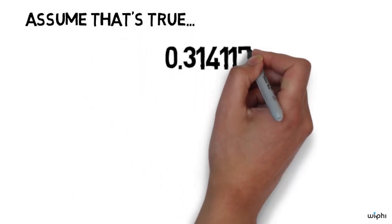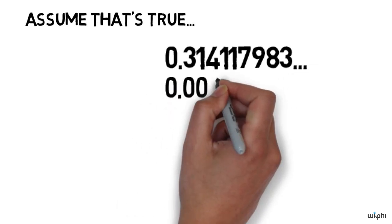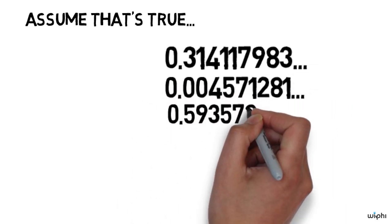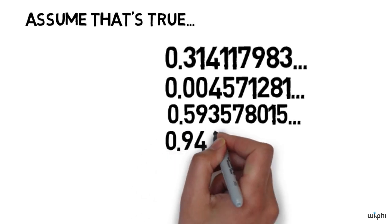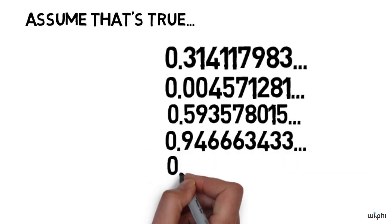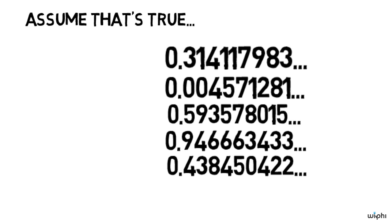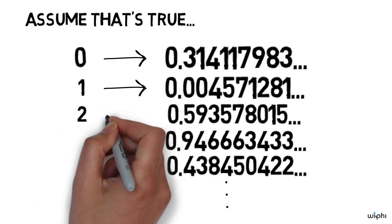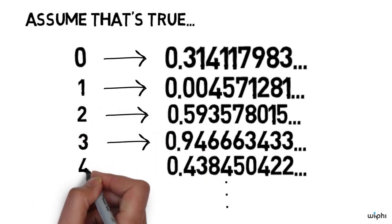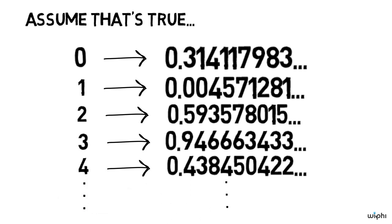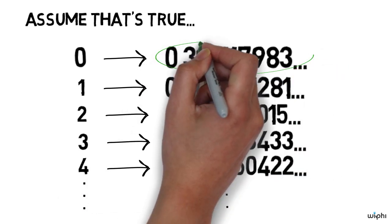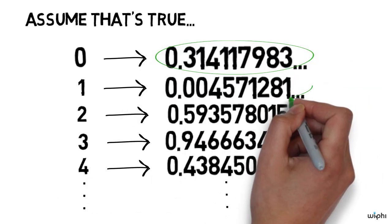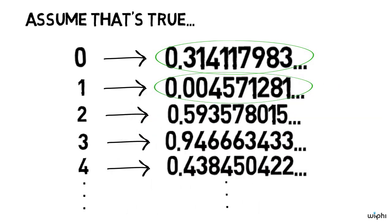Here's a diagram representing that. Each real number between 0 and 1 can be represented as a decimal expansion — you can write it as 0-point and then an infinite sequence of digits. So suppose we can assign a different natural number to each real number between 0 and 1. To the natural number 0 we assign this real number, to the natural number 1 we assign this real number, and so forth.